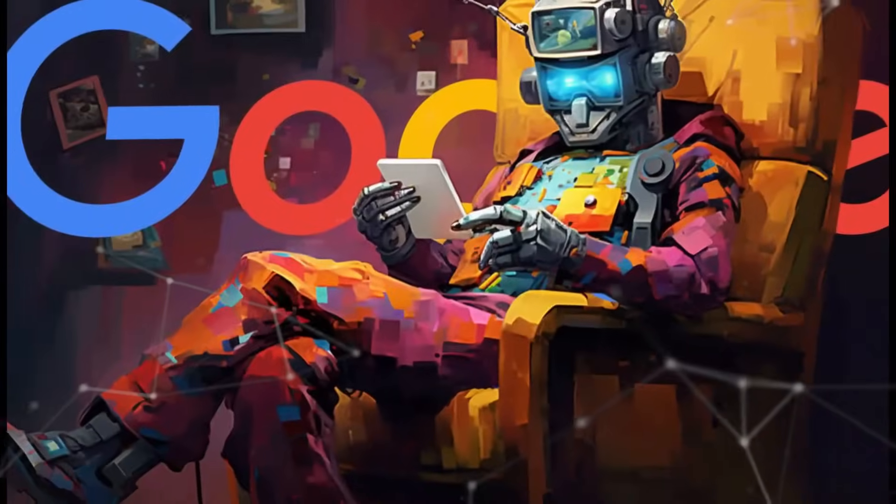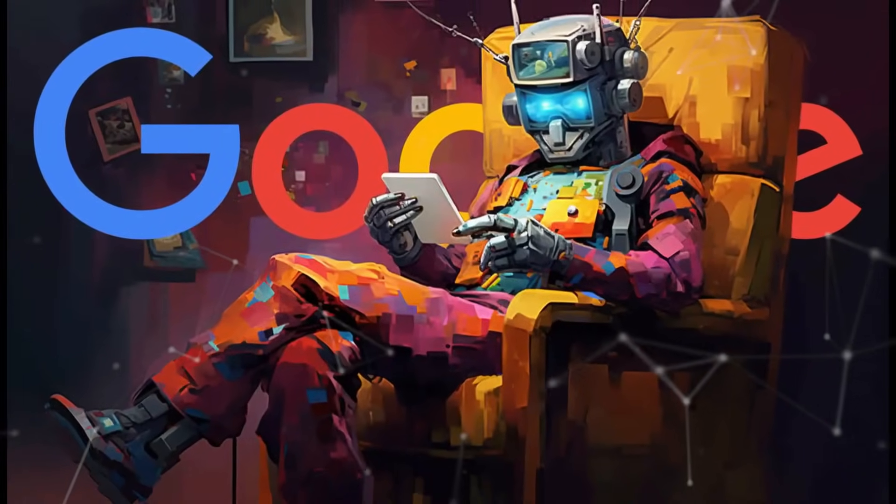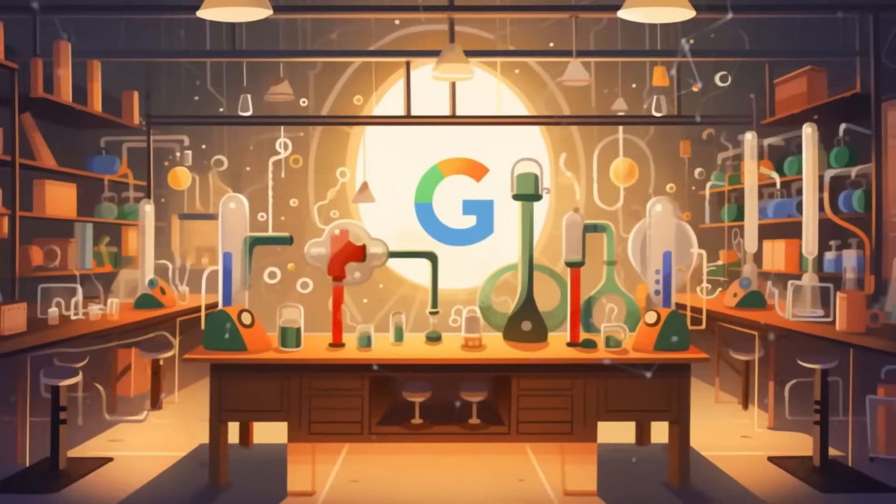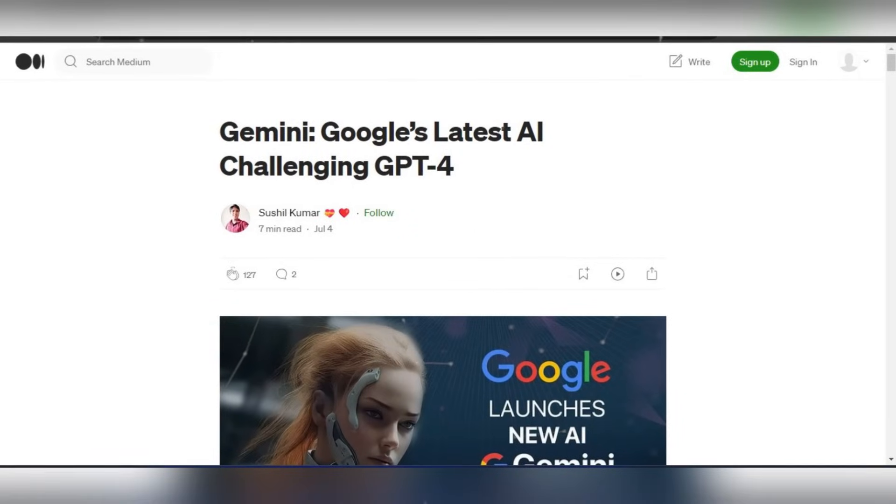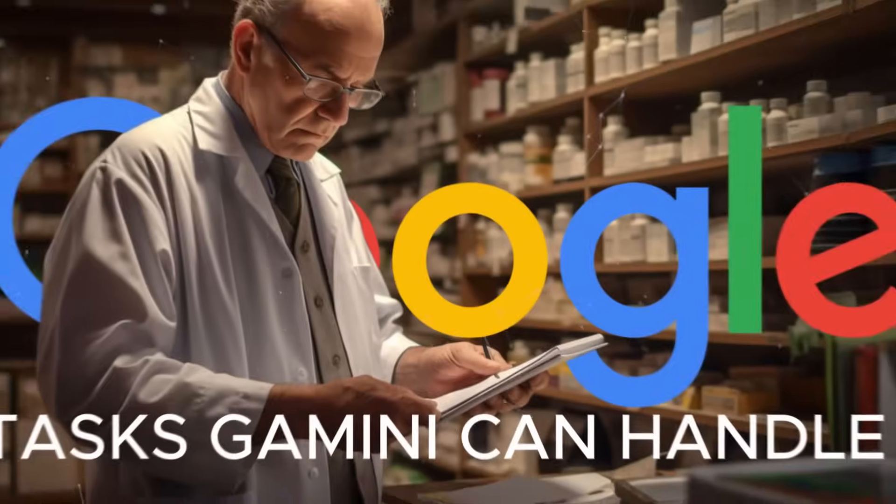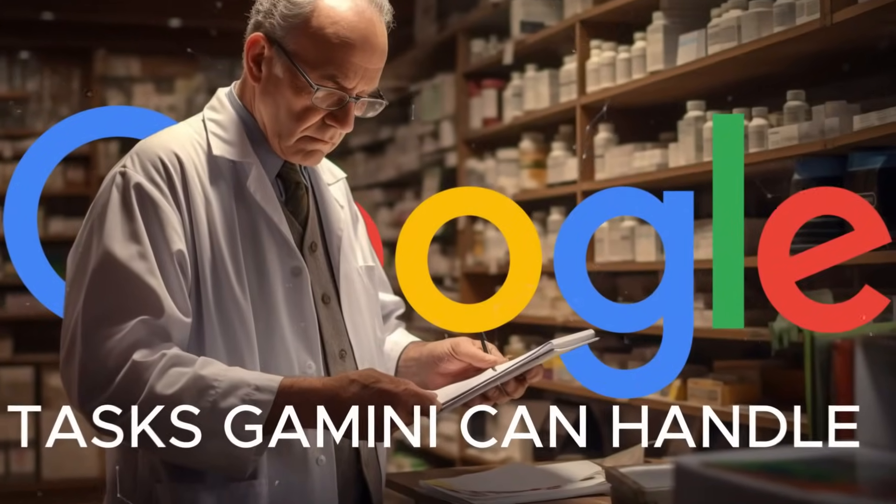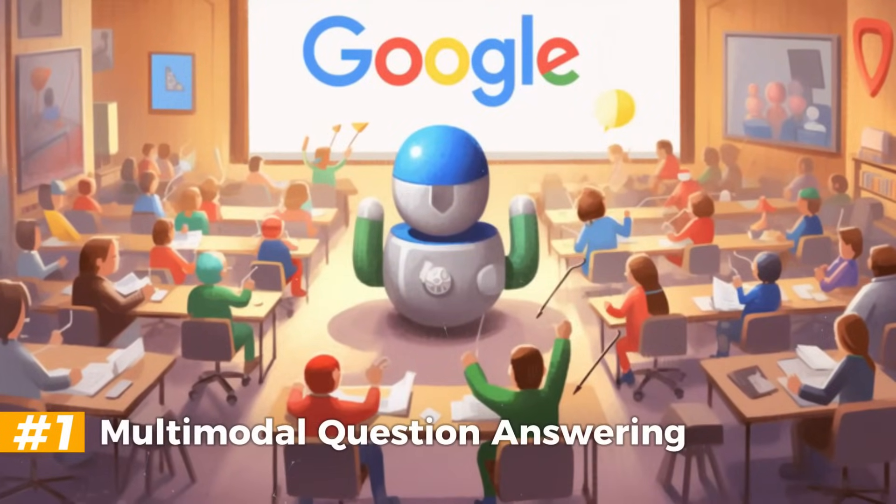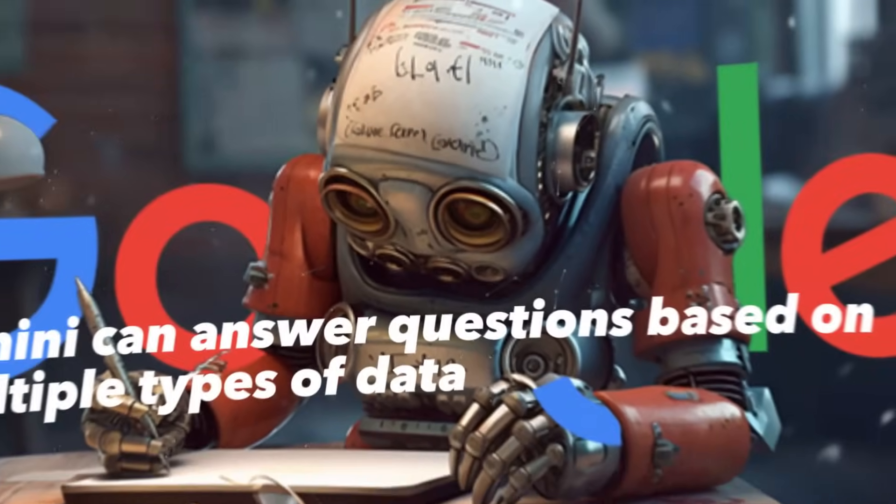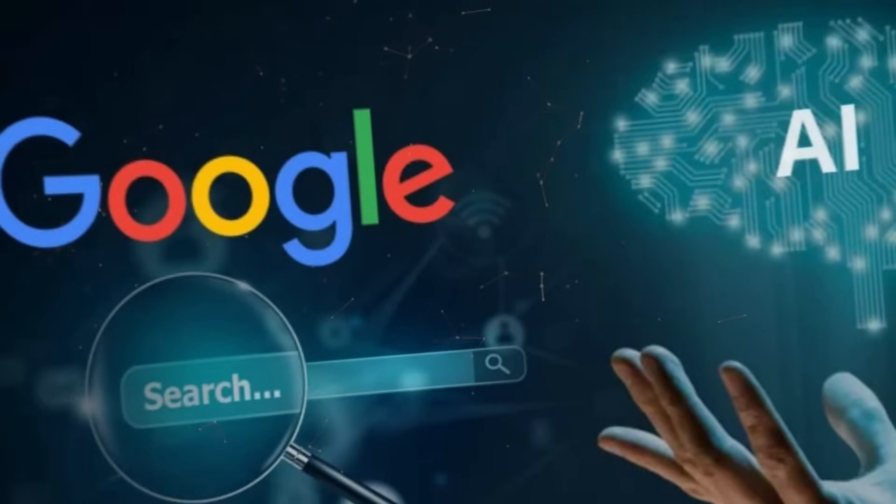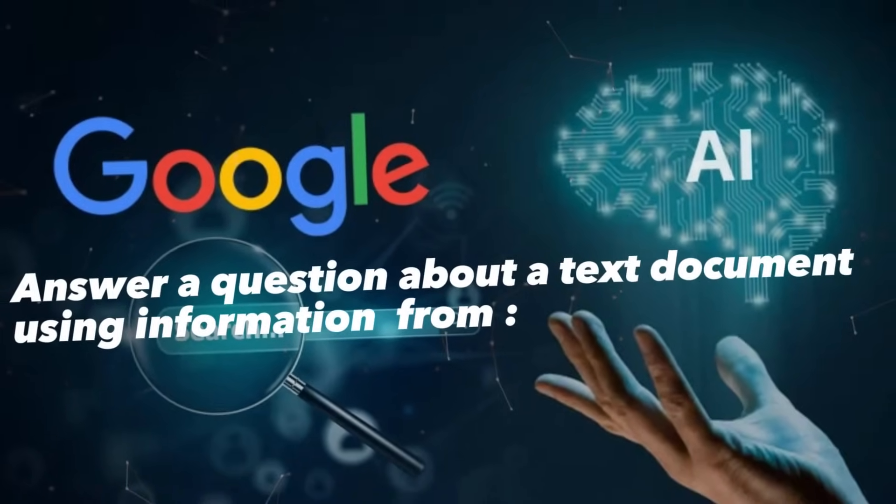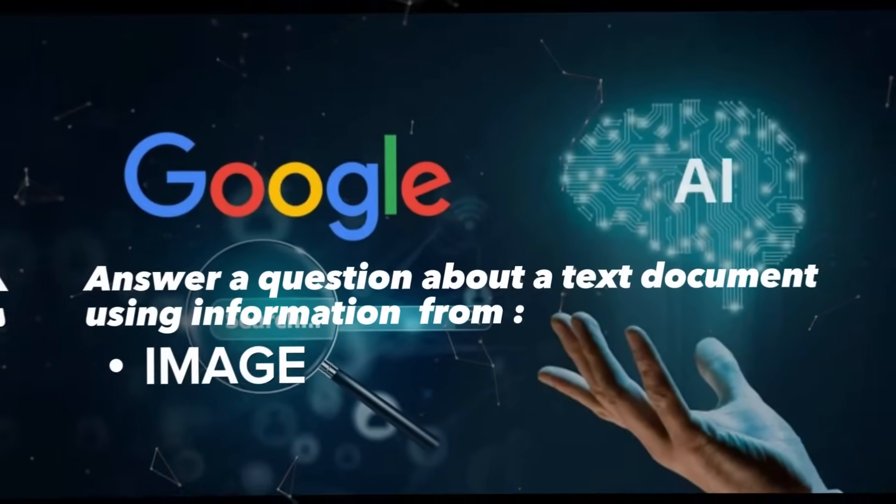When it comes to capabilities, Gemini is a real game changer. It can perform a wide range of tasks that are more varied and complex than those of other large language models like GPT-4. Here are some of the tasks Gemini can handle. Multimodal Question Answering. Gemini can answer questions based on multiple types of data. For example, it can answer a question about a text document using information from an associated image or video.